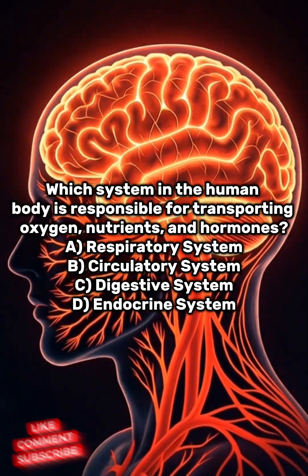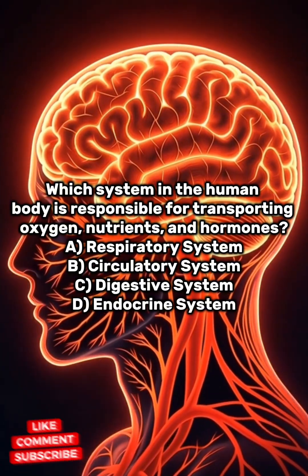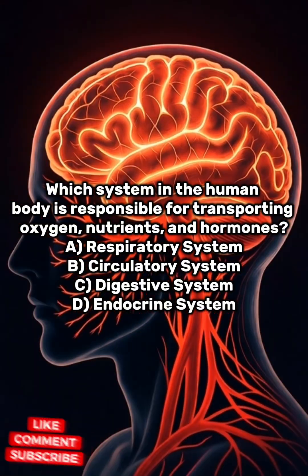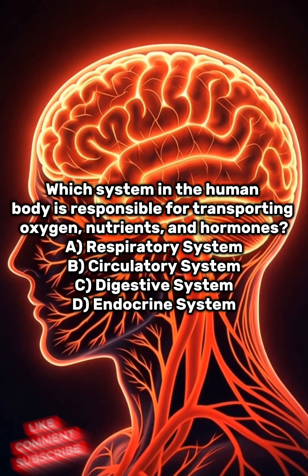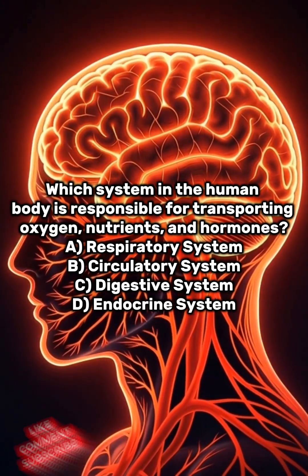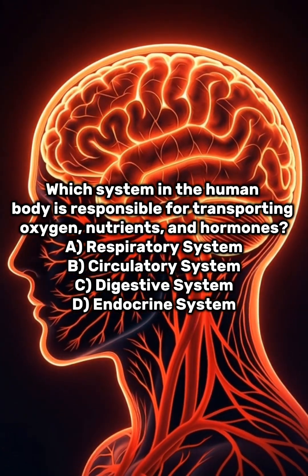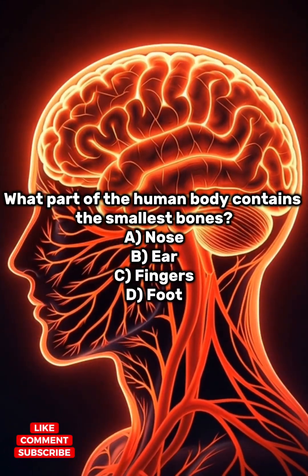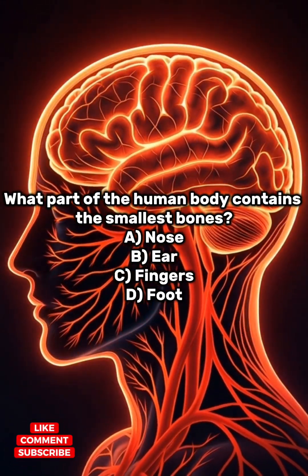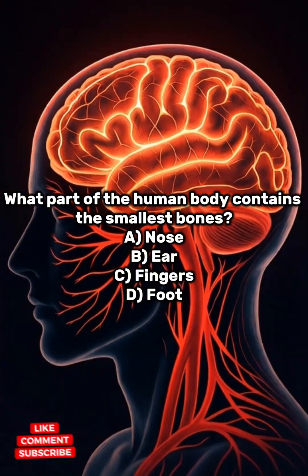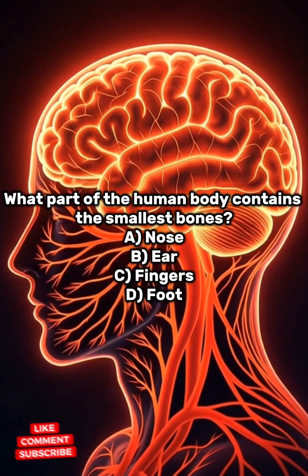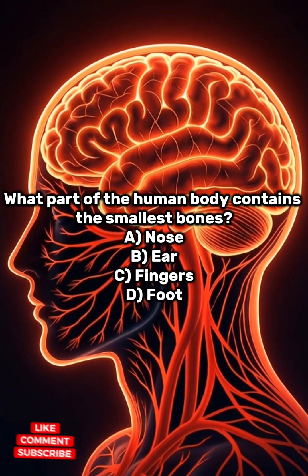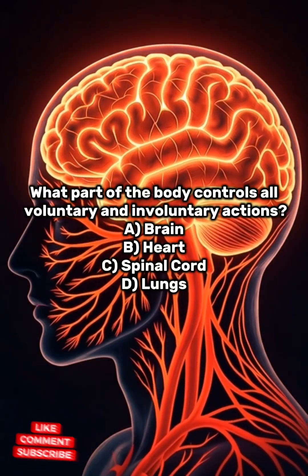A: respiratory system, B: circulatory system, C: digestive system, D: endocrine system. Answer: B, circulatory system. What part of the human body contains the smallest bones? A: nose, B: ear, C: fingers, D: foot. Answer: B, ear.